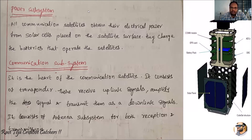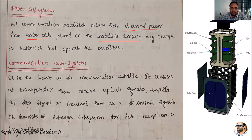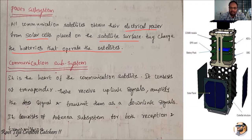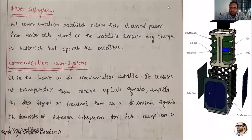Looking at the power subsystem in detail: all communication satellites obtain their electrical power from solar cells. These cells are placed on the surface or outer body of the satellite. They charge the batteries that operate the satellite. Energy taken from the sun is converted into electrical energy, stored in batteries, and later converted to AC or DC as required.